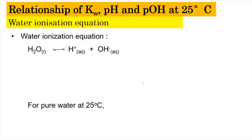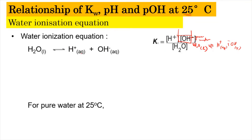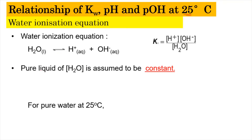Now we relate Kw, pH, and pOH at 25 degrees Celsius — the constant temperature used in our syllabus. For pure water, H₂O dissociates to form H⁺(aq) and OH⁻(aq). Writing the Kc expression gives us [H⁺][OH⁻] divided by [H₂O]. However, since the concentration of pure liquid water is assumed to be constant, it is ignored.